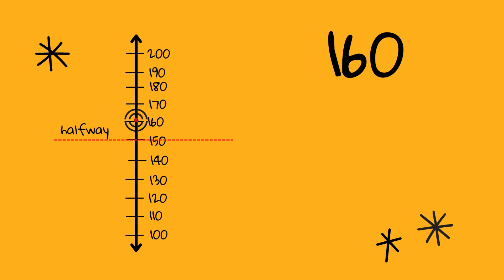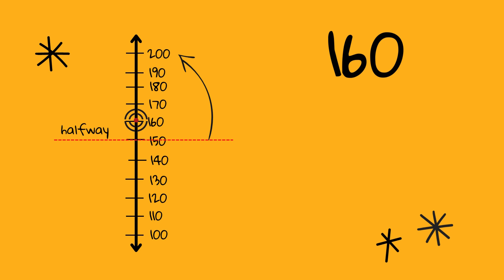Let's round 160 to the nearest 100. Is 160 above the halfway or below the halfway? 160 is above 150, so we would go up to 200. 200 is the nearest 100 to 160.